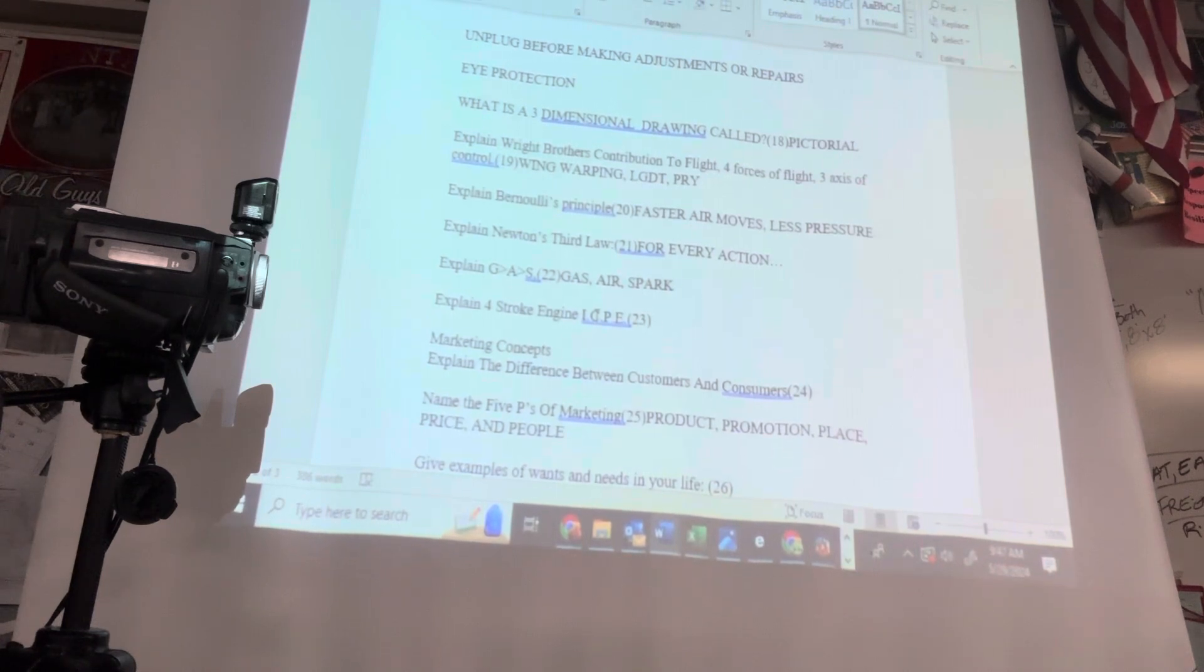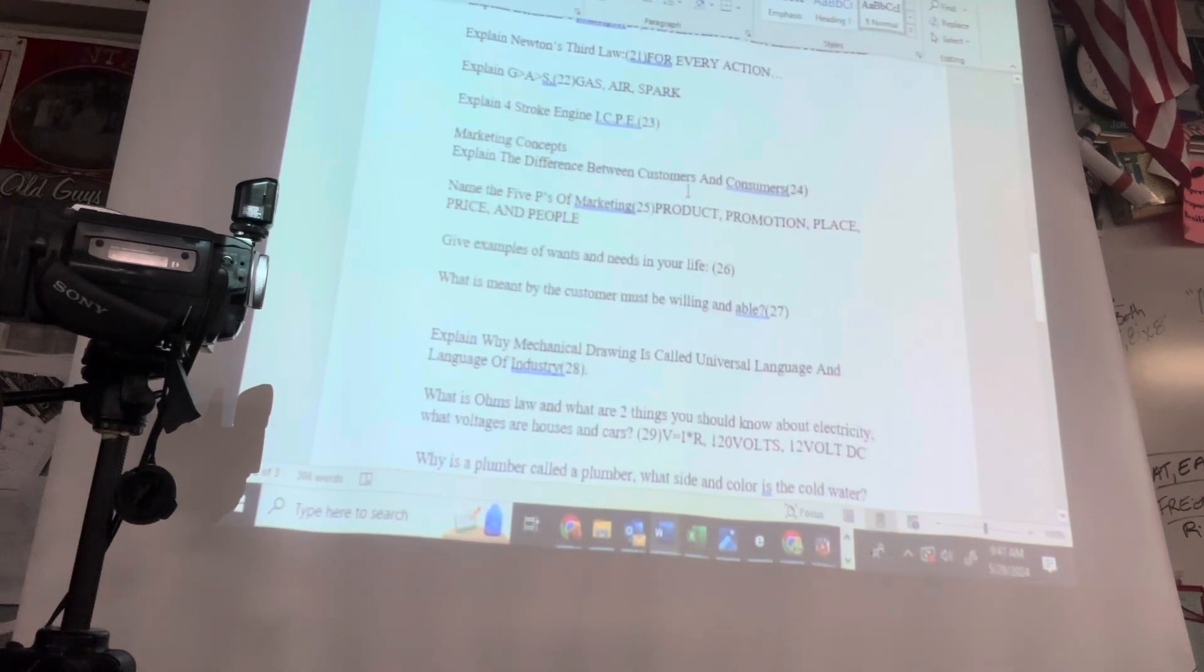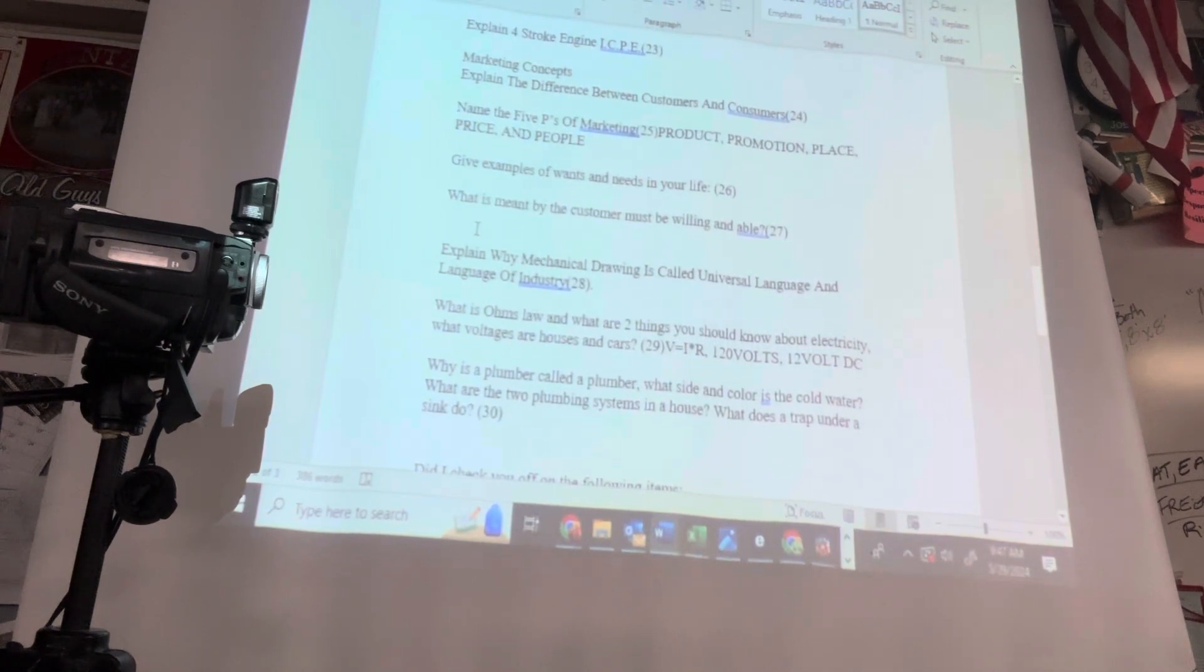Last things on here: the marketing concepts. Explain the difference between customers and consumers. Customers buy it, consumers use it. Name the five P's of marketing: product, promotion, place, price, and I add that fifth one, people. Give examples of wants and needs in your life, answers vary on that. They generally, as a need, there's a thing called the Maslow's hierarchies of needs. What do you need? You need oxygen, you need air, you need water, you need food, and then you know, go down this triangle, the Maslow's hierarchy of needs. The difference between wants and needs, I always say when you're marketing something, ask is it something that people want or something that people need? If no one wants it and no one needs it, no one buys it. Explain why mechanical drawing is called a universal language and why it's called the language of industry. It's a mechanical drawing because it uses tools just like a mechanic uses tools to work on a car. Universal language because it's used everywhere in the world. We could do a drawing here in the United States, send it over to Japan or China, and done.